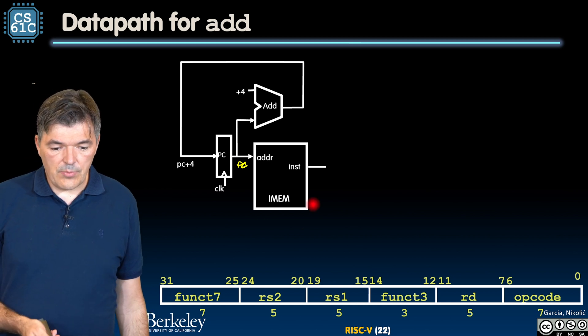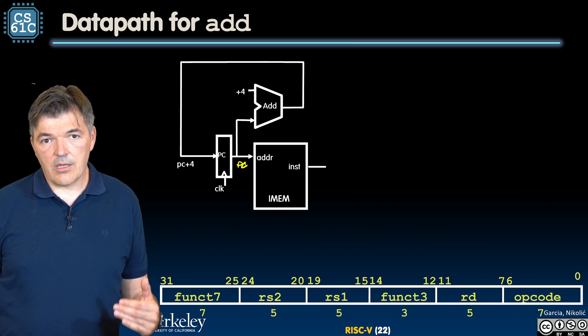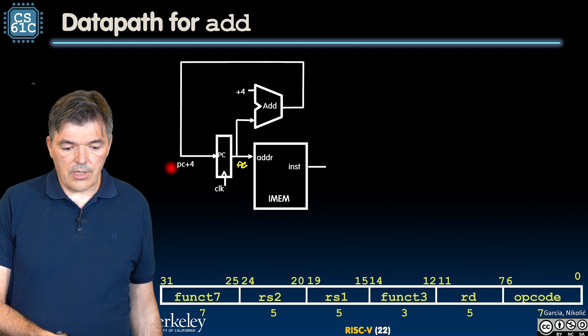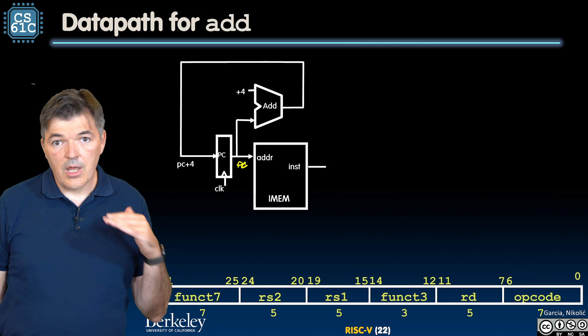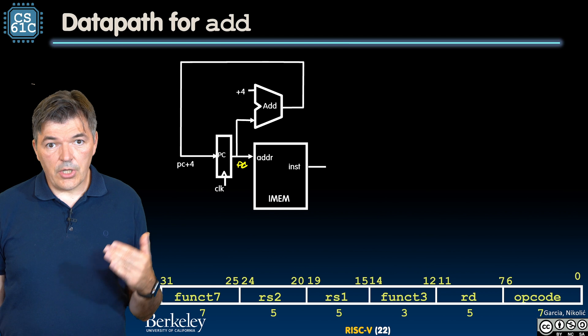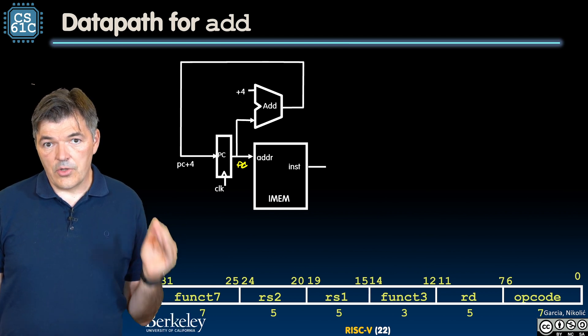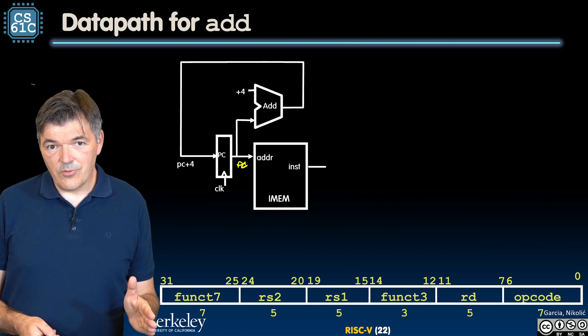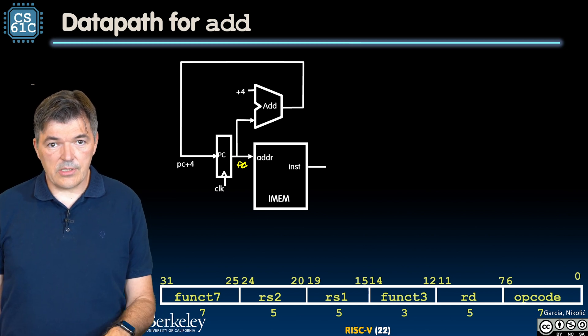Simultaneously we need this piece of hardware, this fixed function adder that will be always adding a value of 4 to the current value of the pc and the pc plus 4 value will be put at the input of the program counter. The contents of the program counter will not change until the next clock tick. On the next rising edge of a clock, program counter will take a new value of pc plus 4.